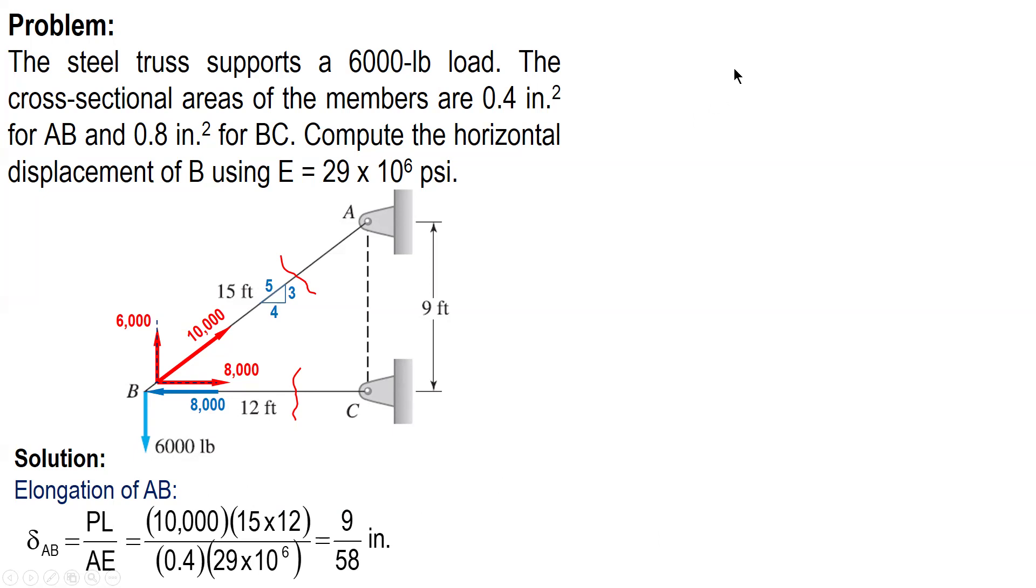And then for BC, shortening since it's compression. So 8,000 pounds. The distance or length is 12 feet times conversion factor. Over area of 0.8 and then E.